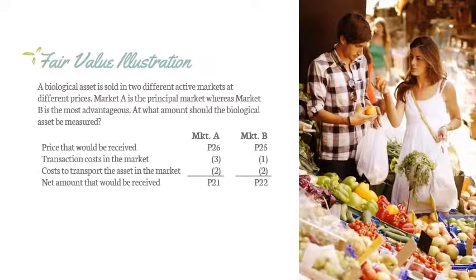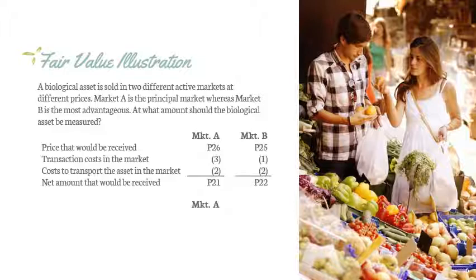Here is a sample illustration on fair value. In this illustration, the biological asset is being sold in two active markets. The principal market is the market with the highest volume and level of activity. Meanwhile, the most advantageous market is the market that maximizes the net amount received on the sale, net of transport and transaction costs. In the table, we see that the net amount received is higher for Market B, the most advantageous market. However, in measuring the biological asset, we should use the quoted price of Market A, the principal market. We solve for the fair value of the asset by deducting the transport cost from the quoted price.